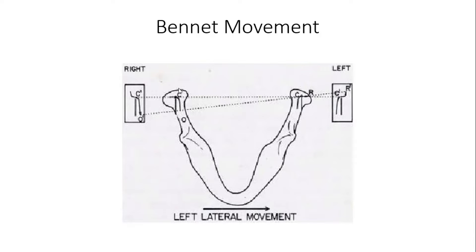If there is no lateral movement at all, then the right condyle will just move in this manner. There will be no lateral movement or lateral side shift, but if there is a side shift, then it will be either immediate side shift or progressive side shift.